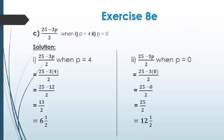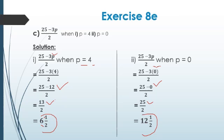Next Part C: (25 − 3p) ÷ 2 when p = 4 and when p = 0. For p = 4: 3 × 4 = 12, so 25 − 12 = 13, and 13 ÷ 2 = 6½. For p = 0: 3 × 0 = 0, so 25 − 0 = 25, and 25 ÷ 2 = 12½. To verify: 2 × 12 = 24, plus 1 = 25. Correct.